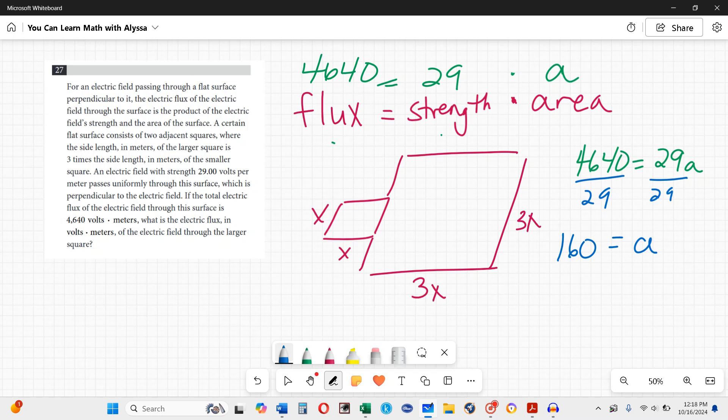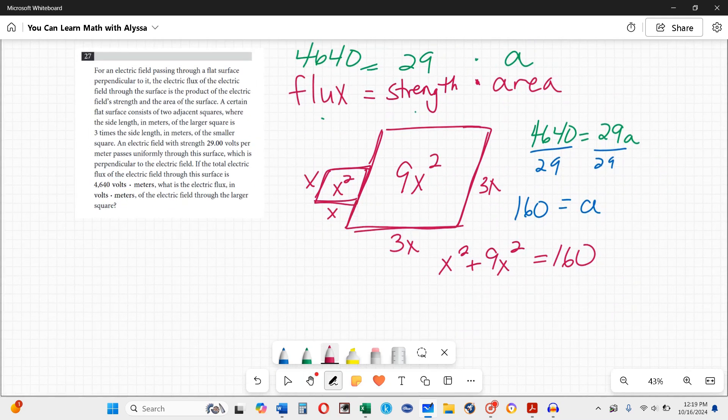If A is 160, that's my total area. What's the area of these two parts in terms of x? The smaller one is x times x, or x squared. The biggest one is 3x times 3x. 3 times 3 is 9, x times x is x squared. x squared plus 9x squared would be the total area using x. I also know the total area using numbers is 160. Now I can solve for that x squared. x squared plus 9x squared is 10x squared.